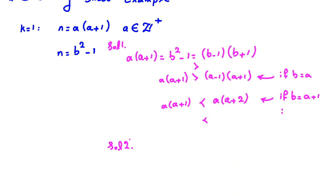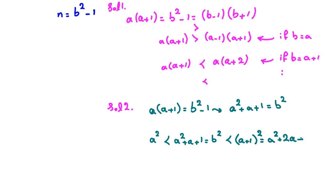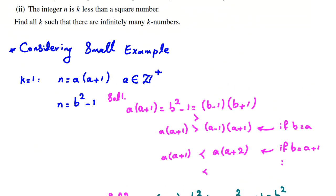Let me tell you another solution, very useful in many problems including USAMO. The idea: we know a(a+1) = b² - 1. Expanding: a² + a + 1 = b². Now, a² + a + 1 is greater than a² (since a is a positive integer), and also less than (a+1)² = a² + 2a + 1, because a is a positive integer. So b² lies strictly between two consecutive perfect squares a² and (a+1)², which is impossible. So we've reached a contradiction for k=1.